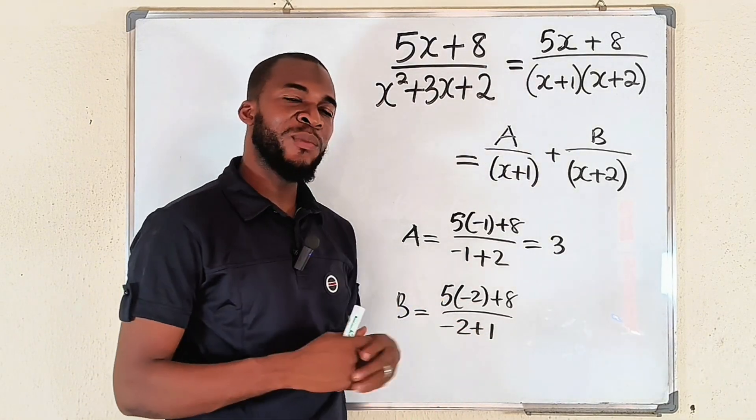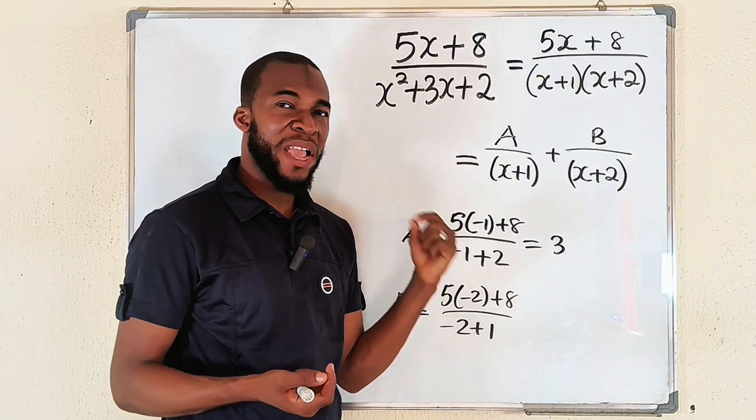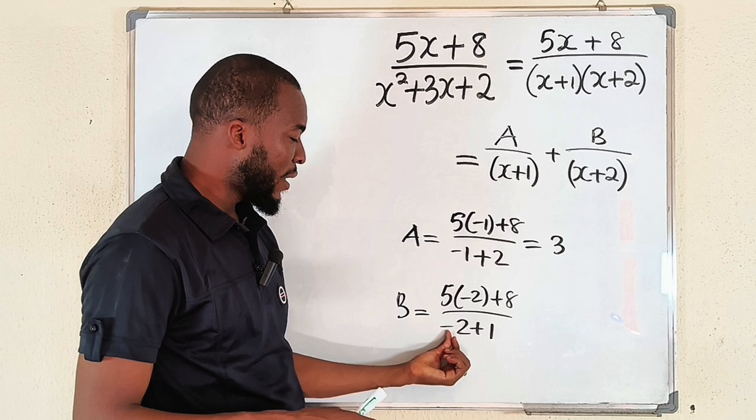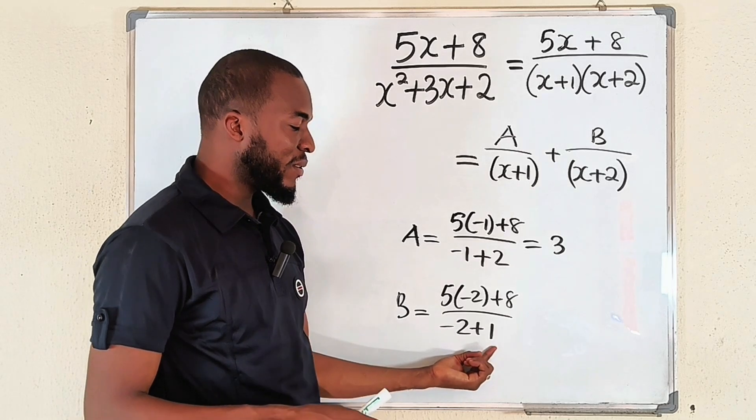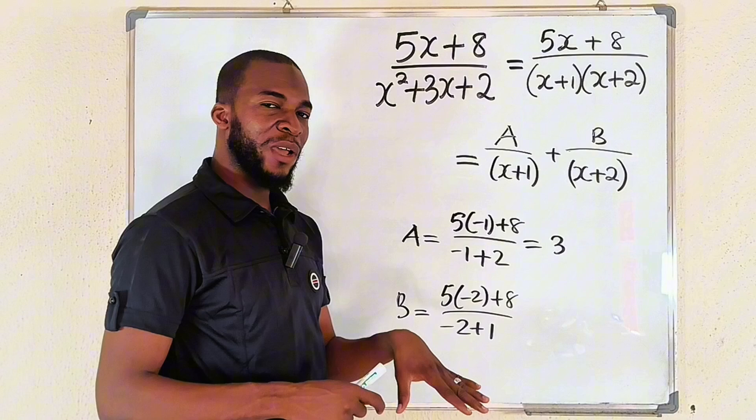5 times minus 2 will give us minus 10. Minus 10 plus 8 will give us minus 2. Remember, the numerator is minus 2. Minus 2 plus 1 will give us minus 1. So minus 2 divided by minus 1 will give us positive 2.